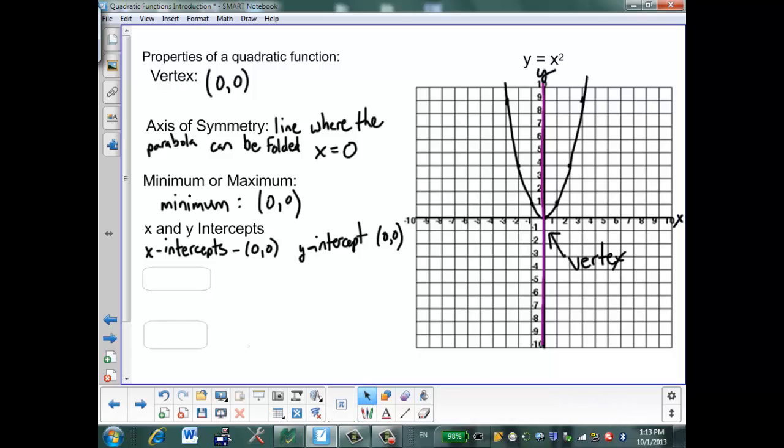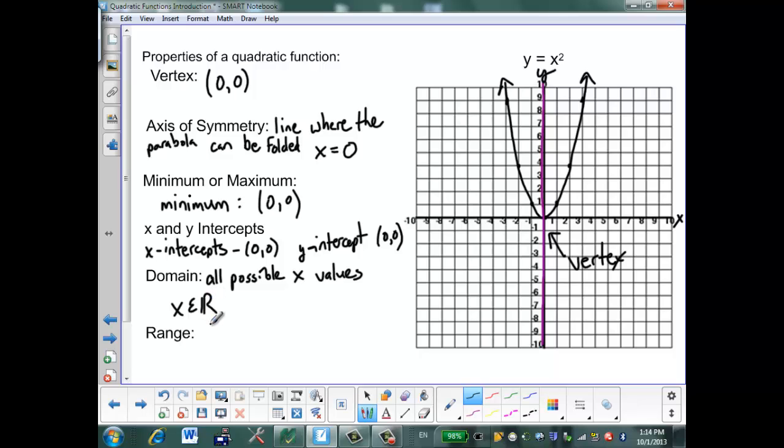My final two properties that I need to look at are domain and range. Now domain of the graph is all possible x values. For a parabola, all possible x values, because this graph goes on in both directions forever, we write as x is the set of all real numbers. The range is all possible y values. And the range in this example, because my graph on the y axis goes down to 0 and then goes back up and never goes below 0, all of my y values must be greater than or equal to 0.